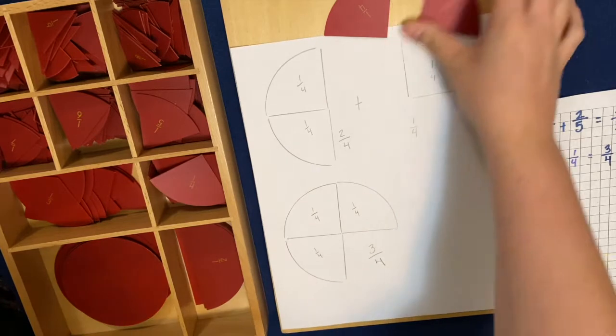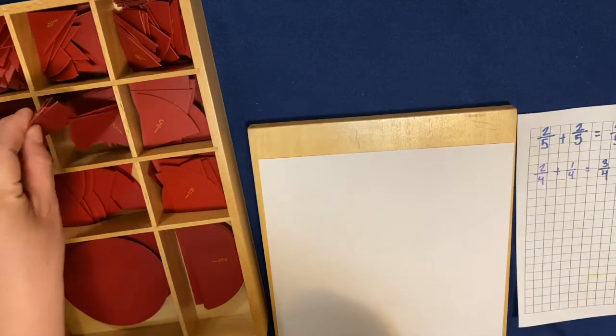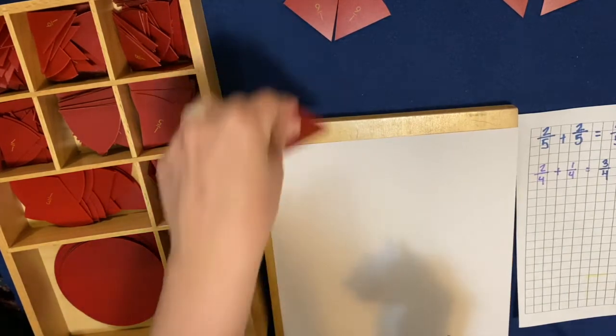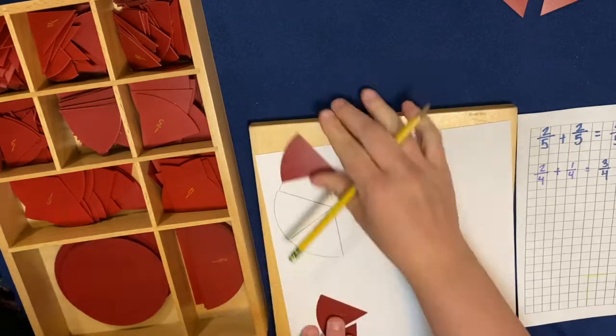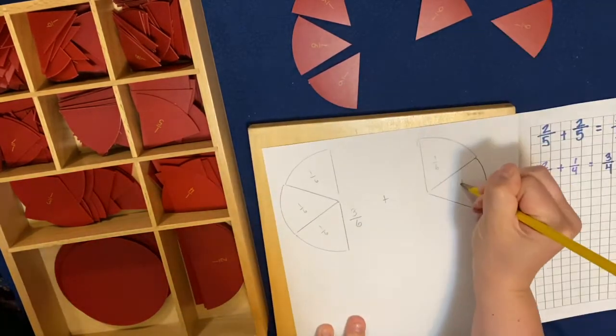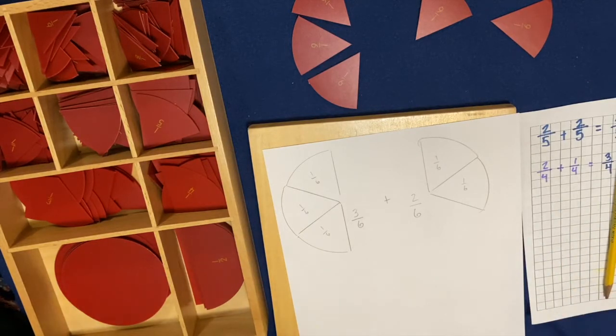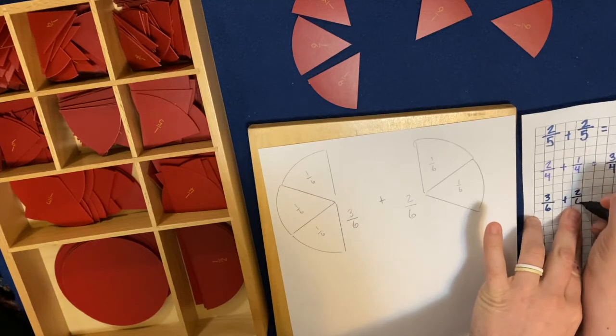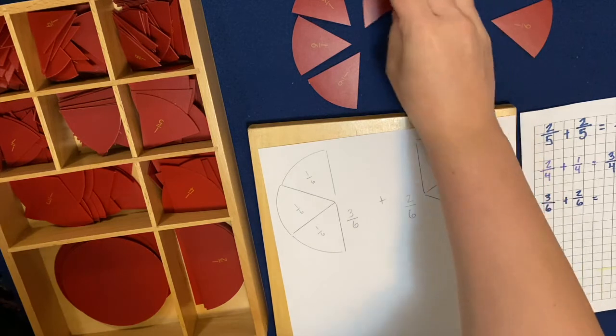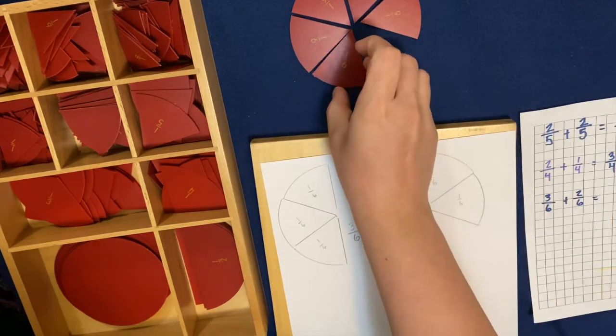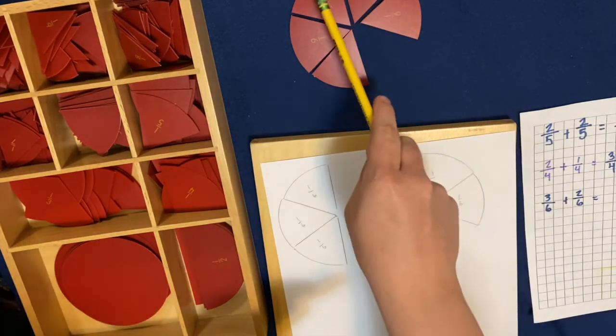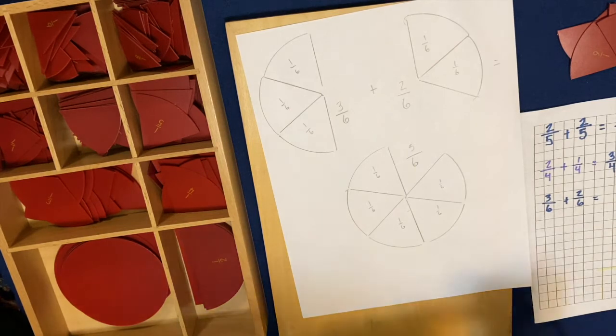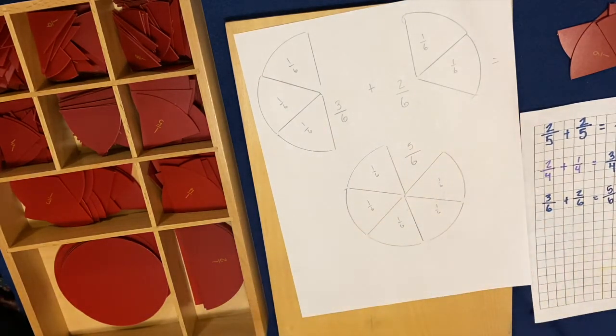Let's do one more addition problem, and then we'll move on to subtraction. This time we'll do something that's a little bit smaller in fraction size. Three-sixths plus two-sixths. So we have some tracing to do. And I'm going to write it down in numbers over here. Three-sixths plus two-sixths equals. So when we push all these together, how many sixths do we have? One, two, three, four, five. Five-sixths. So equals five-sixths.